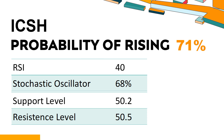ICSH's short-term resistance level is 50.5. If it breaks through 50.5 during the session, it will look up to 50.5.